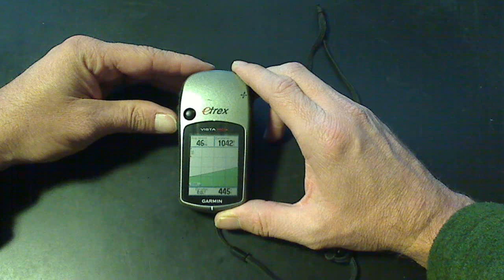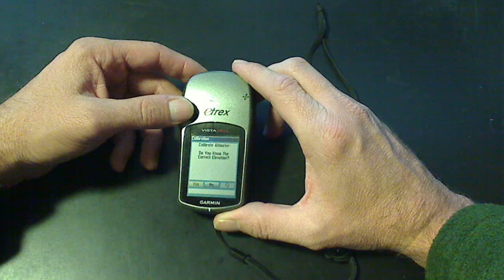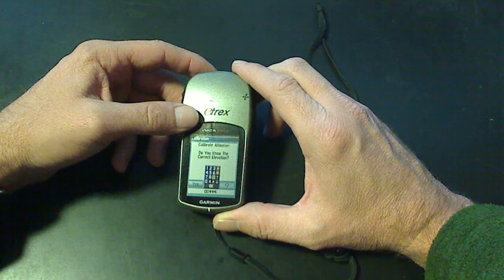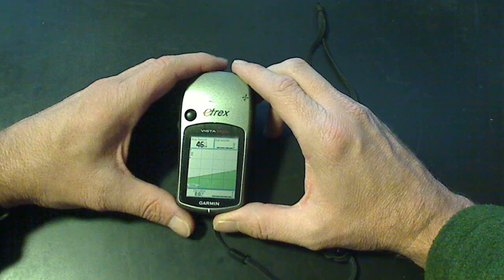We can set the altimeter here. If you know that you're at the top of Mount Pinus, you can come down here and calibrate altimeter. Do you know the correct elevation? And you can say yes. And then you can edit the information. I think I'm about 280, I think it's 283 feet. Set that here and say okay.